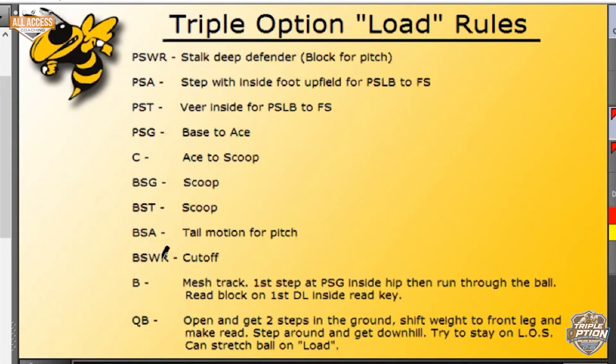The play side guard's rule is base to ace. The center's rule is ace to scoop. And the back side is scoop. Everybody else on the back side is cut off. It's usually an eight-man front, an eight-man defense. You get an ace to the back side linebacker.